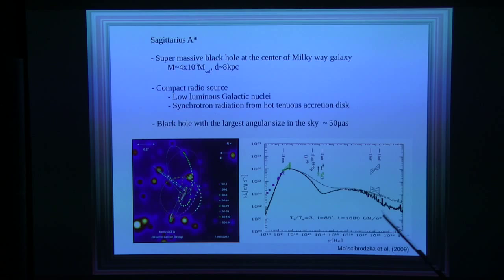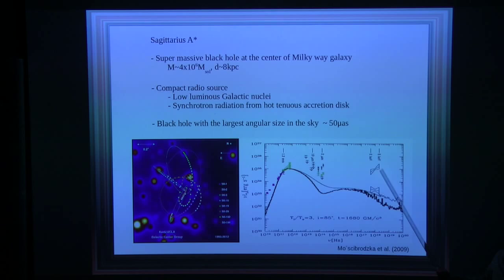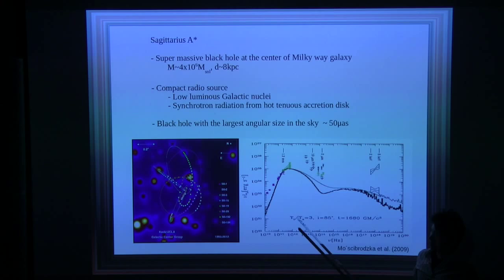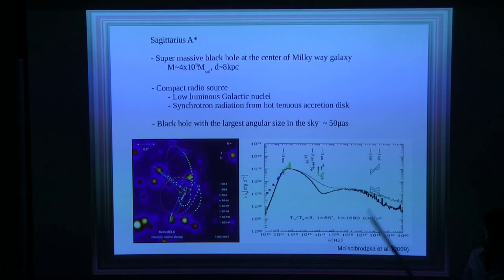Sgr A* is categorized as a low-luminosity galactic nucleus, emitting at radio wavelengths primarily due to synchrotron radiation from a hot and tenuous accretion disk. This is an example model spectrum from Moscibrodzka et al. 2009. There is a synchrotron emission bump peaking around one millimeter — 1.3 mm — the exact wavelength we want to observe with the EHT. There is another bump from inverse Compton-scattered photons, plus flaring states in X-ray and infrared. Sgr A* has the largest angular size of any event horizon in the sky, about 50 micro-arcseconds.